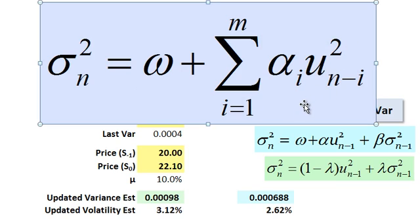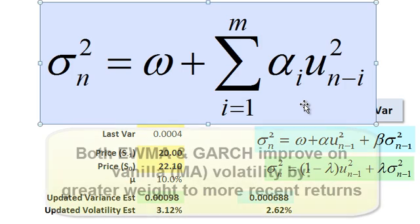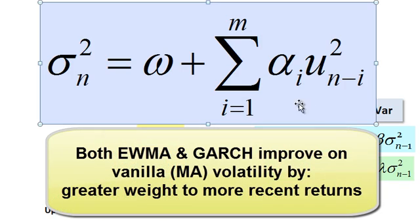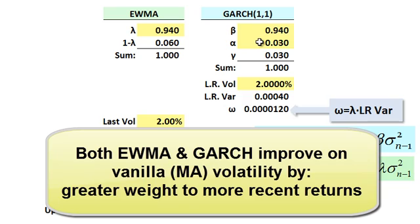That's the vanilla volatility. What's the glaring problem with it? The problem is, if you think about a long series, yesterday's return is getting the same weight as the return at the beginning of the series, which is a long time ago. So, that's not as realistic. Both of the exponentially weighted moving average and GARCH try to improve on that with these conditional estimates that give greater weight to more recent returns.